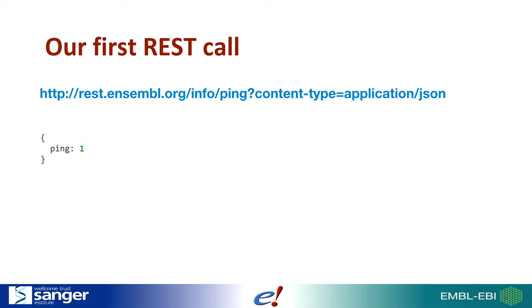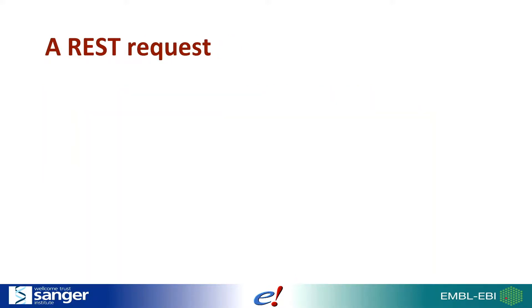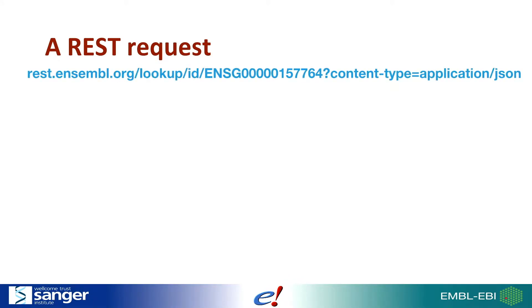The ping endpoint isn't very useful for analyses beyond checking if a server is alive. So let's look at another example. We have a URL that can be used by software or by humans in a browser to look at Ensembl data. This makes debugging easier — any request your software makes, you can simply type into your web browser to test if you've written the URL correctly or to explore what data you'll receive back. In this case, we've asked the lookup endpoint to tell us everything Ensembl knows about a particular gene based on its stable ID. This returns a JSON-formatted record which can be easily manipulated by your software.